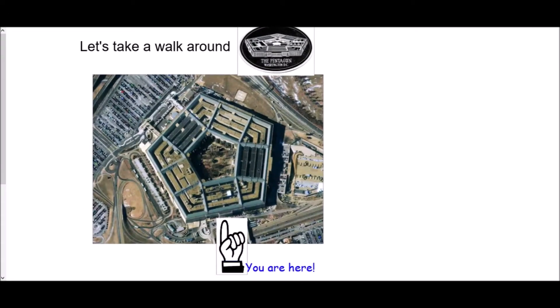Next we're going to look at the exterior angles of a polygon. In this case we're looking at regular polygons — any shape where all of the sides are straight and they are all the same length. We're going to begin with the Pentagon, the building in Washington DC.